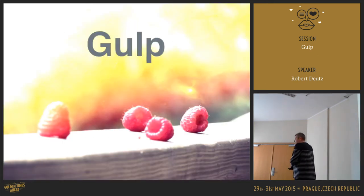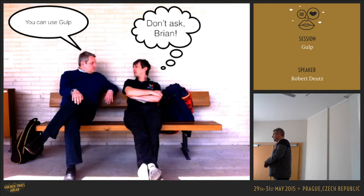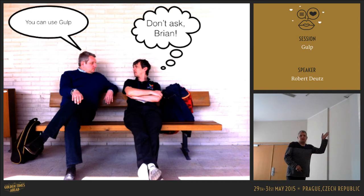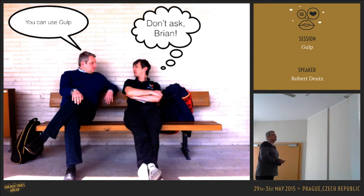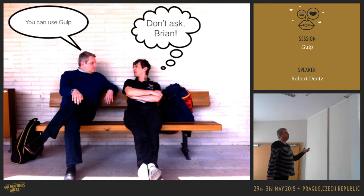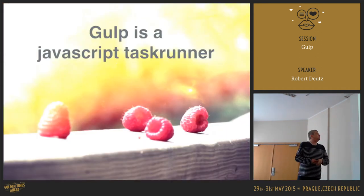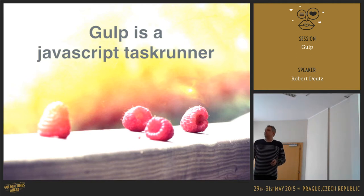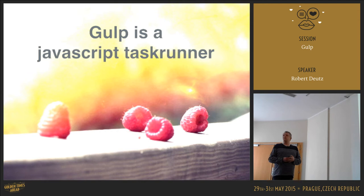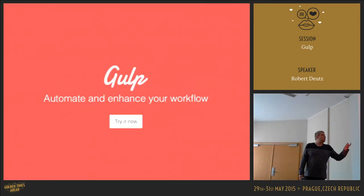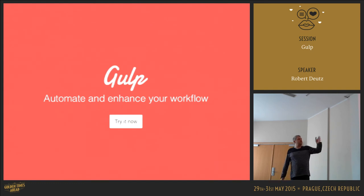Next is Gulp. This was at a Spanish Joomla day. So what is Gulp? Gulp is a JavaScript task runner — you can run tasks with JavaScript. On the Gulp website it says: automate and enhance your workflow. Try it. And that's what we are doing today.